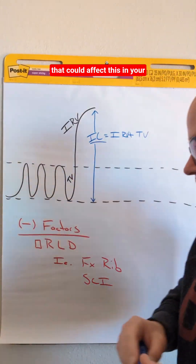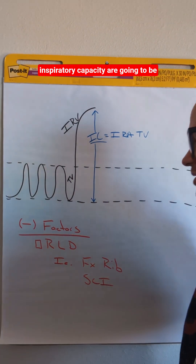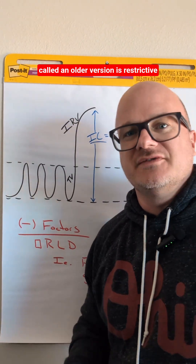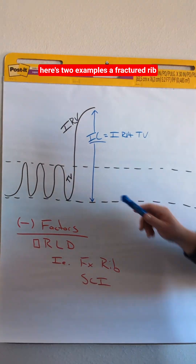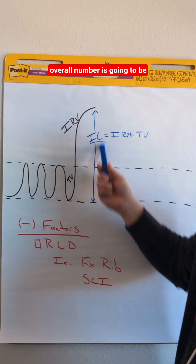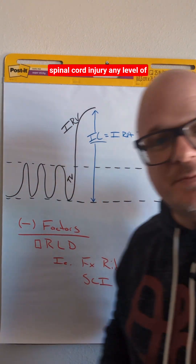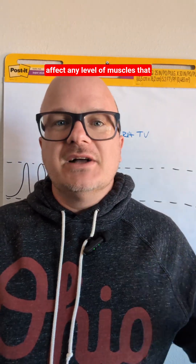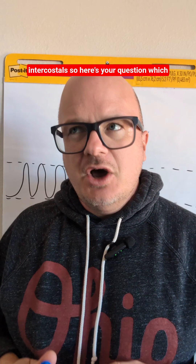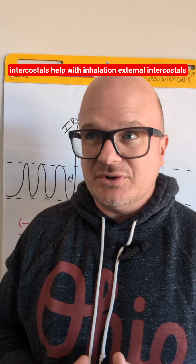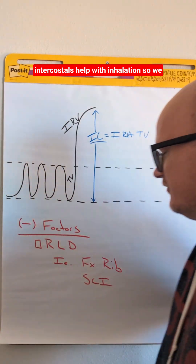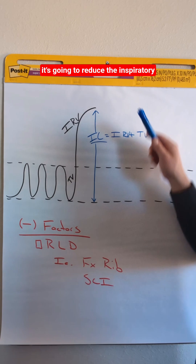Let's think about some things that could affect this in your patient. Some negative factors — things that are going to reduce the inspiratory capacity — are restrictive lung disorders. Here are two examples: a fractured rib. Ribs don't want to move when you have a fracture, so it's going to hurt, you're not going to breathe in as much, and this overall number is going to be affected. Also SCI — a spinal cord injury at any level is going to affect the muscles that control inhalation, like the diaphragm or the intercostals. Which intercostals help with inhalation — external or internal? The external intercostals help with inhalation. Anything affecting them, especially connected to a fractured rib or an SCI, is going to reduce the inspiratory capacity.